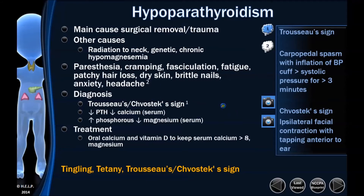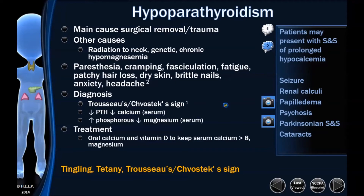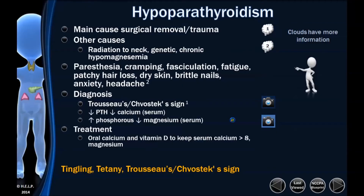Treatment is the same: replacement of the calcium. People who are significantly hypoparathyroid can be very sick — you can also see seizures and Parkinsonian symptoms in severe cases. Our treatment is oral calcium and vitamin D to keep the serum calcium greater than eight. Remember, a serum calcium greater than eight is your goal in treating hypoparathyroidism.